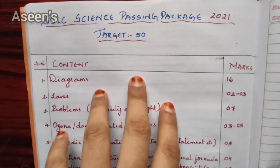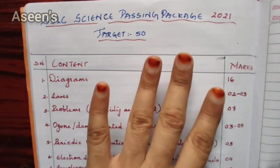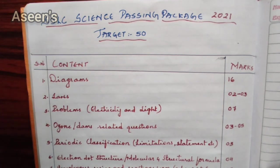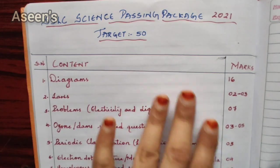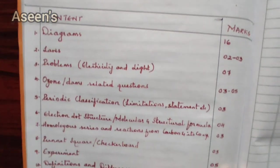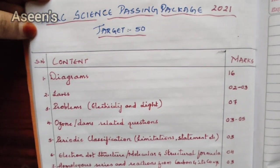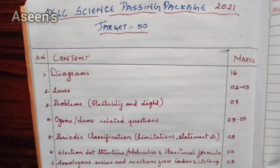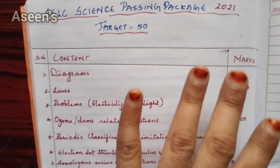Welcome back. Today I have come up with the science passing package for the year 2021. This passing package is with respect to the coming board exam in June 2021. It is called 'Target 50' because whatever content I have given here, with the marks allotted, it accounts for a total of 50 marks. This content was prepared by analyzing the model question papers received from the KCEB site about a week back.